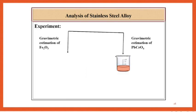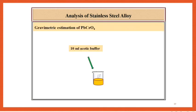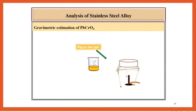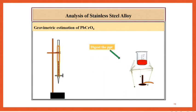Next step is estimation of PbCrO4 gravimetrically. Take the previously preserved solution and add 10 ml acetate buffer solution and 20 ml 4% lead nitrate solution. Chromium is precipitated as PbCrO4. Digest the precipitate on a water bath for about 20 minutes until the precipitate forms.